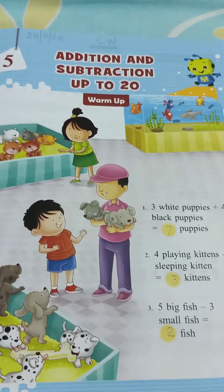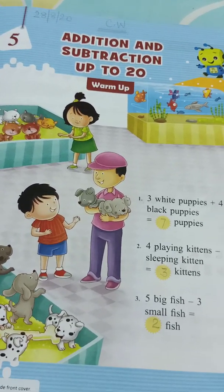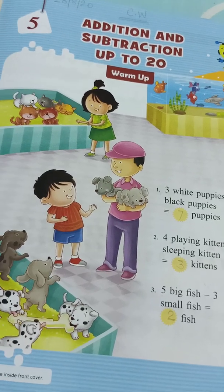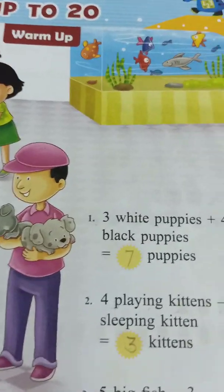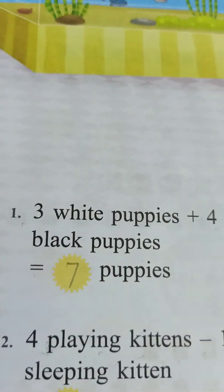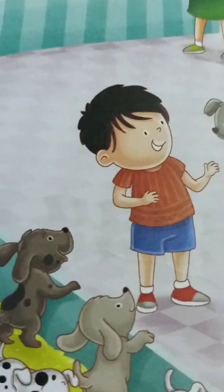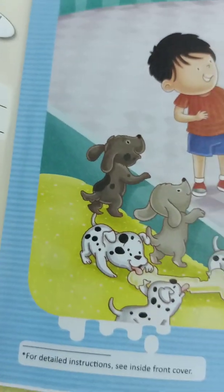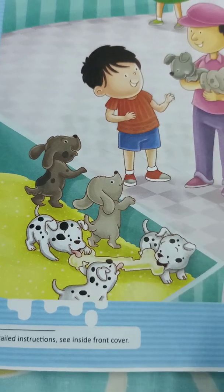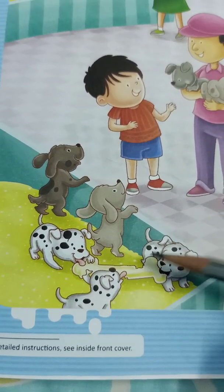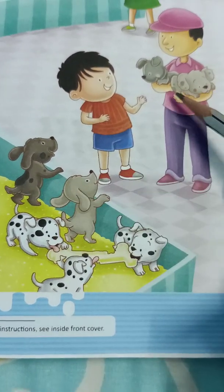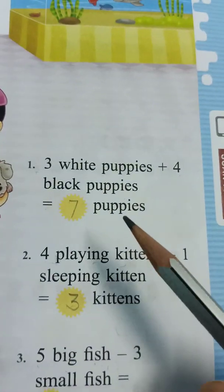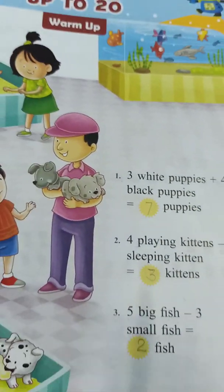First one is three white puppies plus four black puppies. Now we have to count here. One, two, three, four, five, six, seven. Total seven puppies.